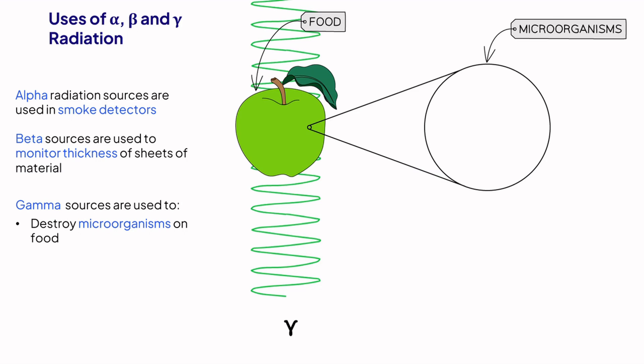Gamma radiation can also be used to sterilize medical equipment, perform PET scans to identify tumors or even irradiate cancerous cells in radiotherapy.